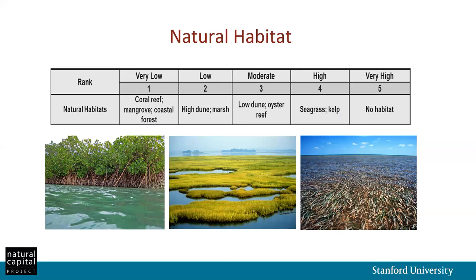The next input is natural habitats. The model takes into account information about the extent and type of both biotic and abiotic natural habitats, and applies a user-defined rank corresponding to the potential for different habitat types to provide coastal protection. For example, coral reef, mangrove forests, and dense coastal forests might be given a rank of one, indicating greater protection effectiveness than habitats such as seagrass or kelp forest, which provide some protection but less than the more rigid habitats.